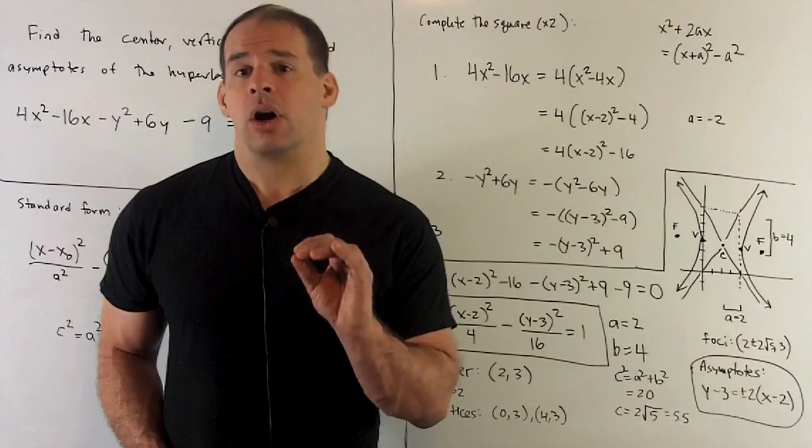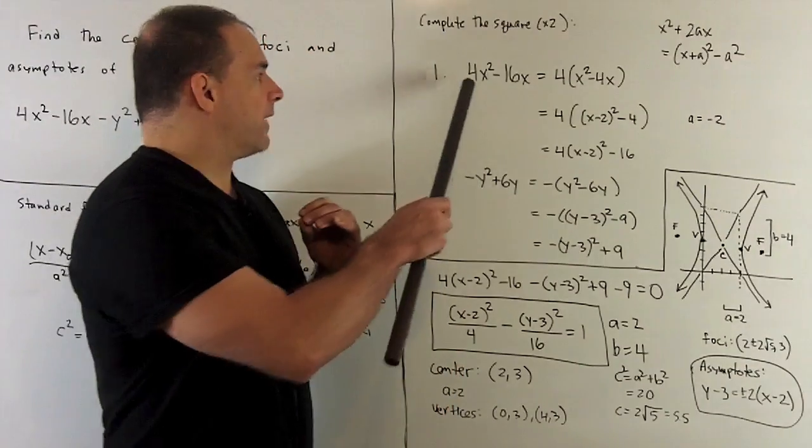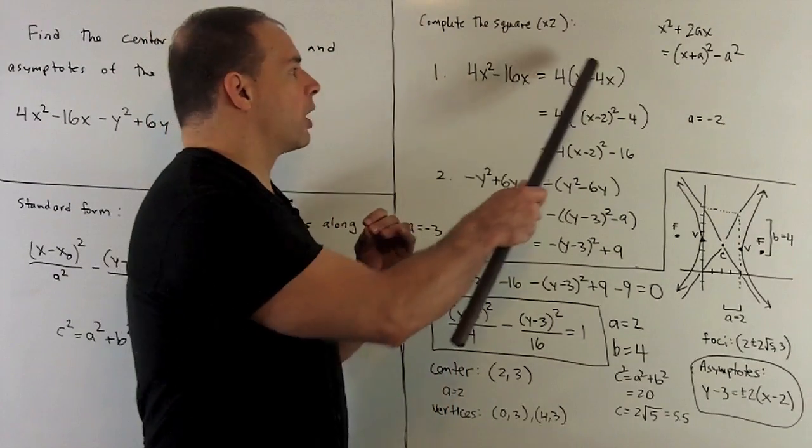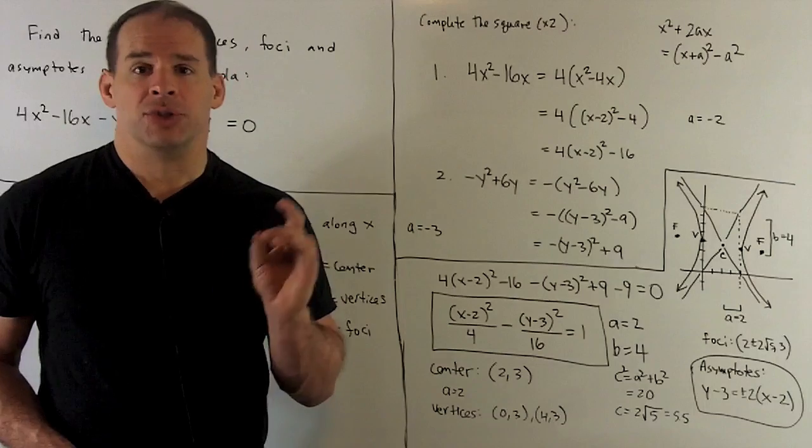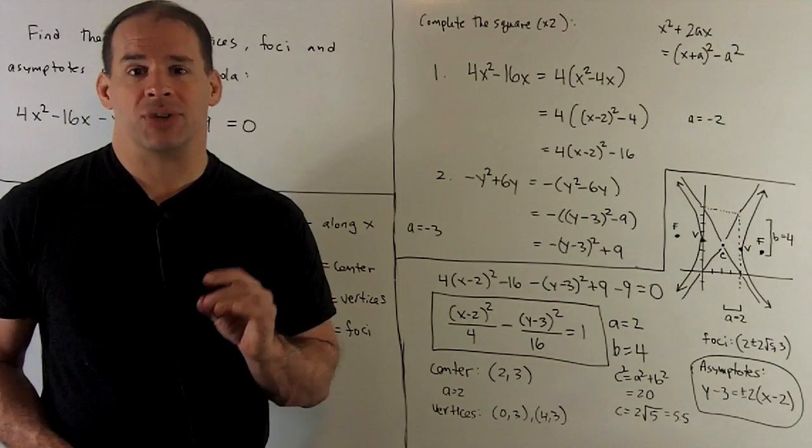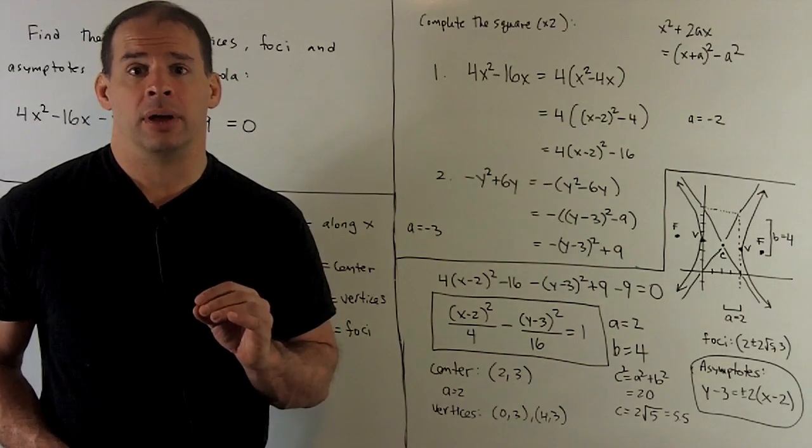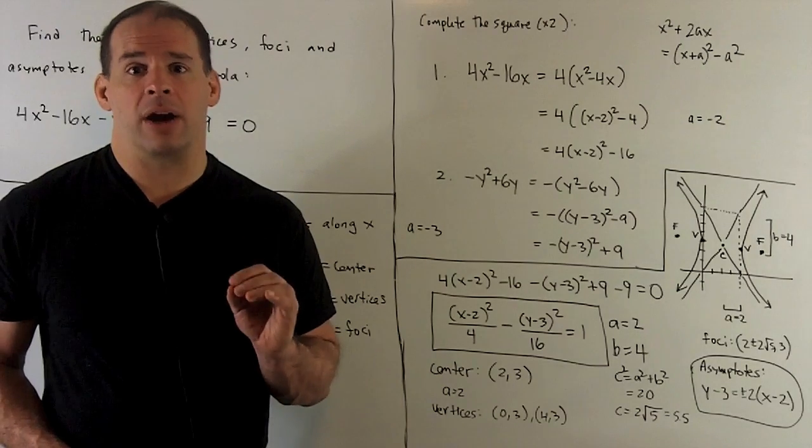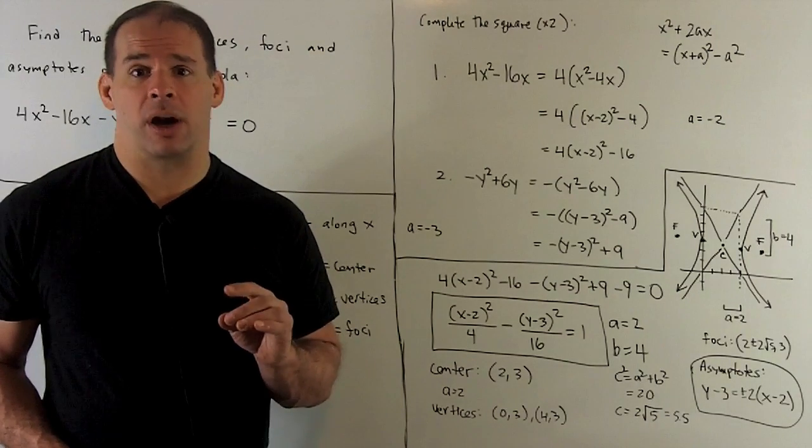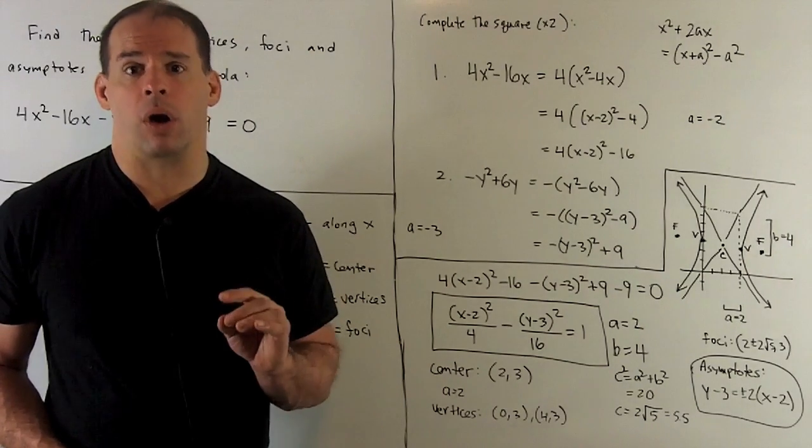So for our x terms, I'll factor the 4 out. Gives me x² - 4x. 2a = -4, so it gives me a = -2. Go to the equation. That's going to give me (x - 2)² - (-2)², which is 4, so I have -4.